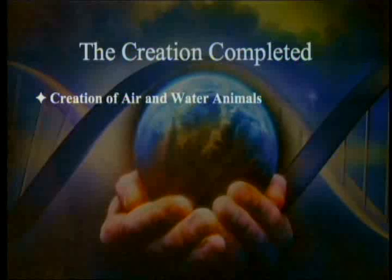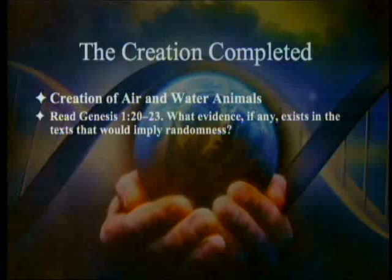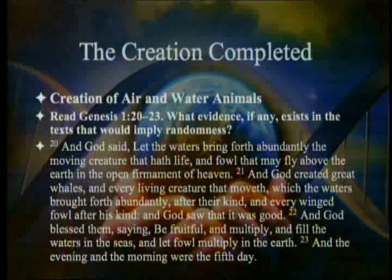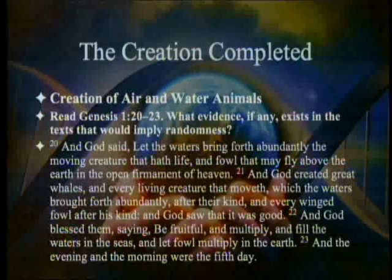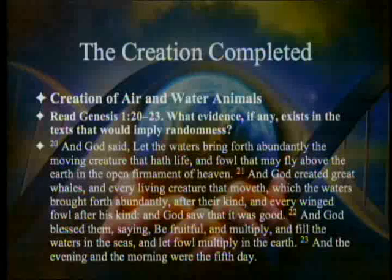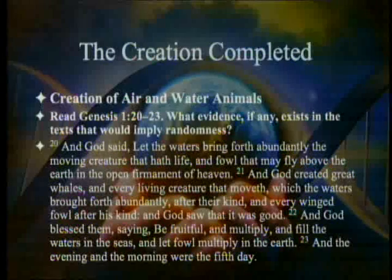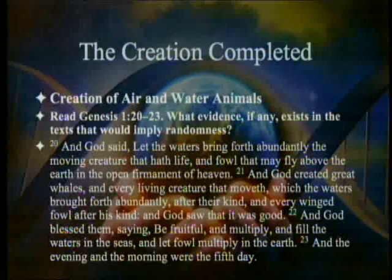Creation of air and water animals — read Genesis 1:20–23. God said: 'Let the waters bring forth abundantly the moving creature that hath life, and fowl that may fly above the earth in the open firmament of heaven.' God created great whales and every living creature that moveth, which the waters brought forth abundantly after their kind, and every winged fowl after his kind. And God saw that it was good. And God blessed them, saying, 'Be fruitful and multiply, and fill the waters in the seas, and let fowl multiply in the earth.' And the evening and the morning were the fifth day.